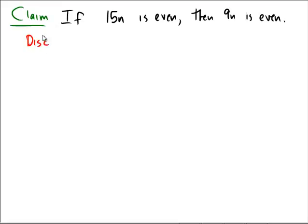Begin with some discussion. So, if 15n is even, that would mean that 15n is equal to 2 times k. Now, unfortunately, our claim over here is about 9n.